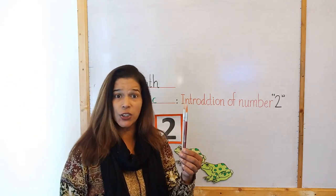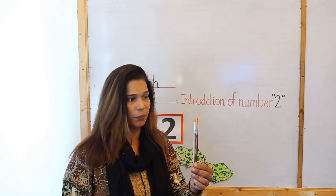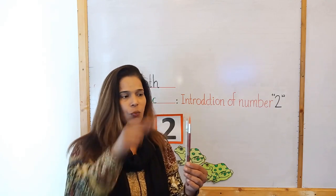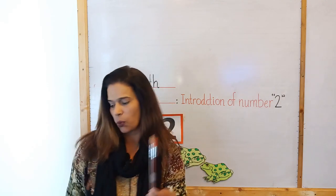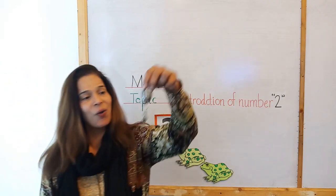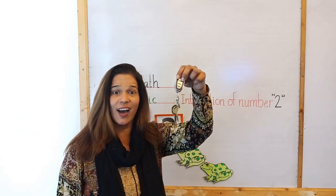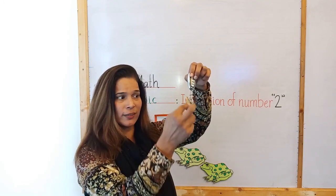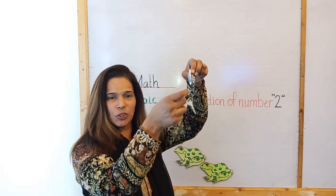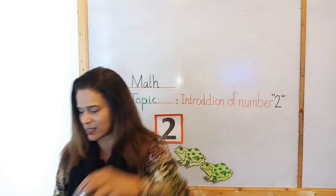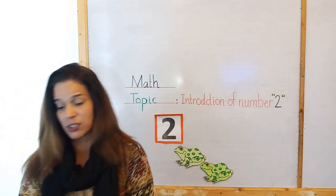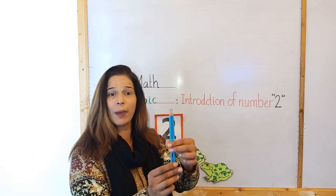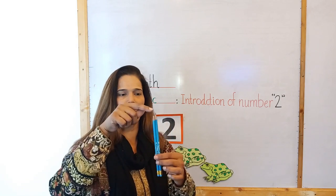What are these? These are brushes. Let's count them: one, two. How many brushes? Two brushes. Very good! What is this? These are keys. How many keys? One, two. Two keys. Now tell me, what are these? These are pencils. How many pencils? One, two. Two pencils. Very good!